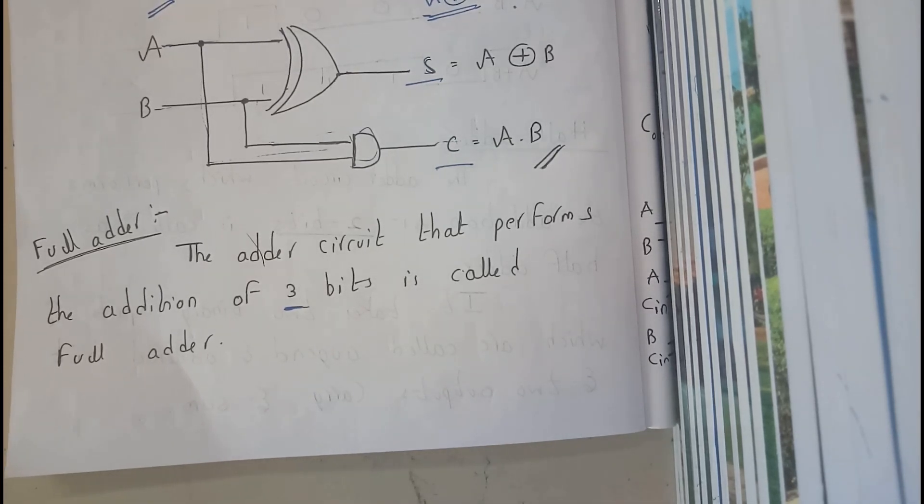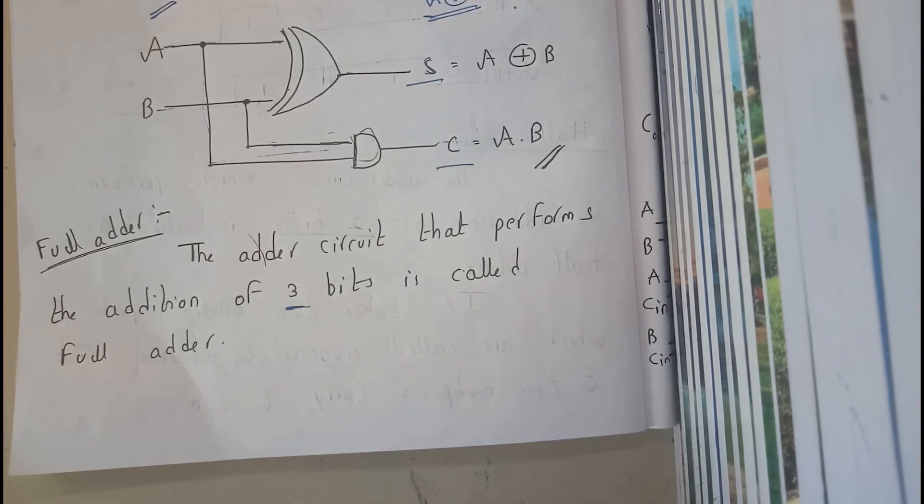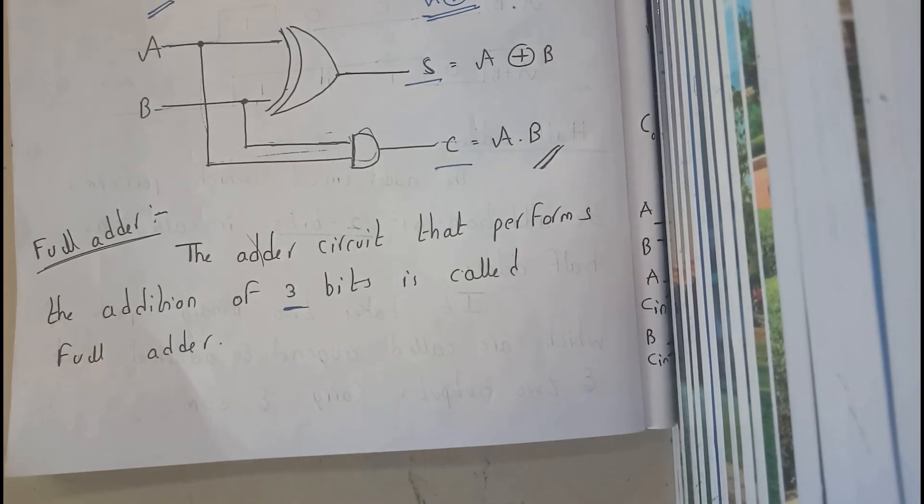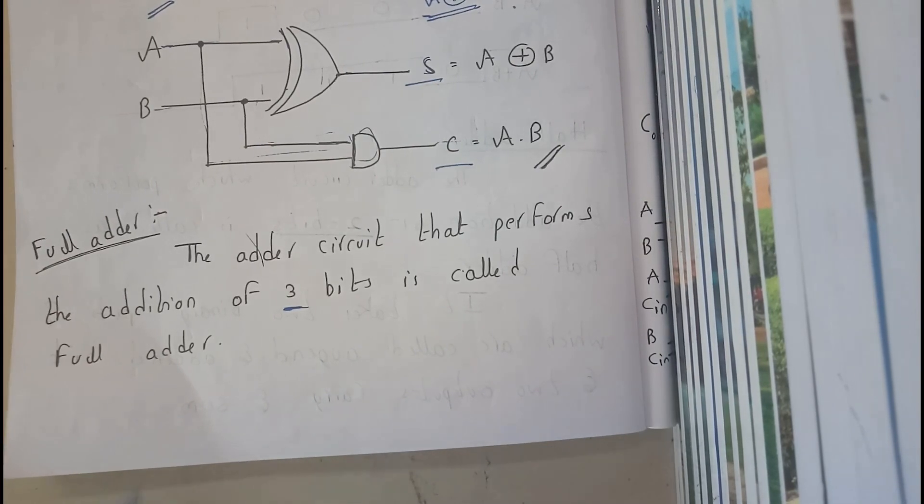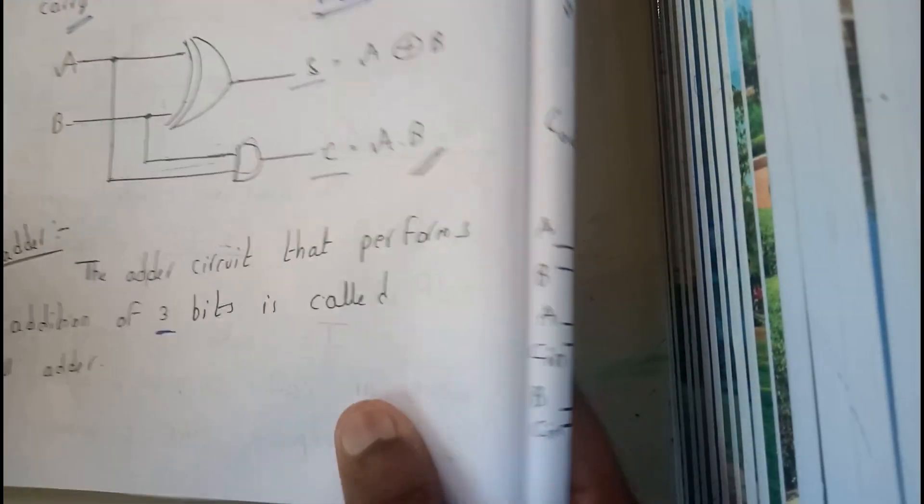So full adder will be carrying 3 bits whereas half adder can carry only 2 bits. You may ask me what is the 2 bit, what is the 1 bit. So it is nothing but the number of inputs. In the previous one we have got 2 inputs that is A and B. So here we can use 3 inputs, that is nothing but A, B, C. So let us go through it right now.